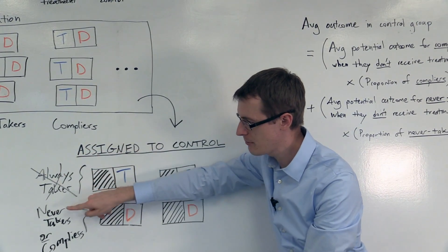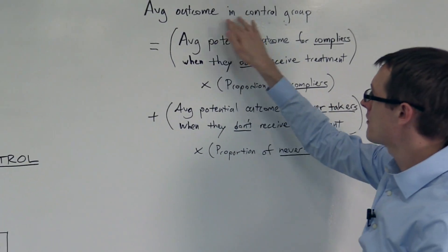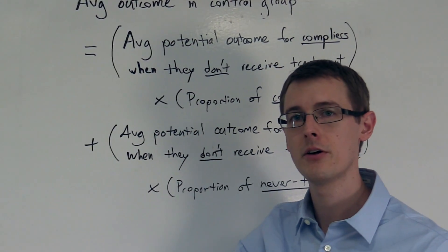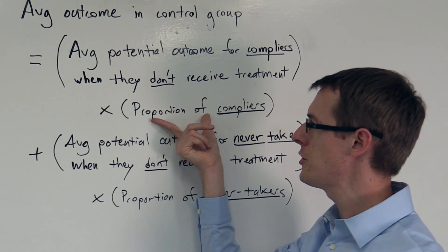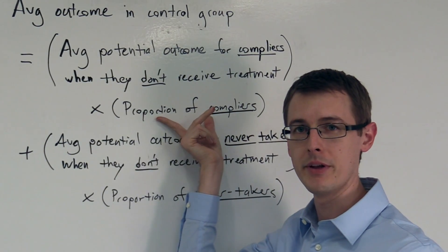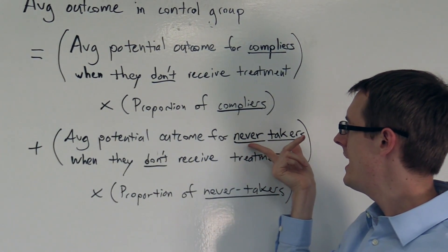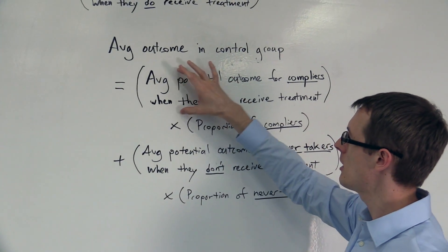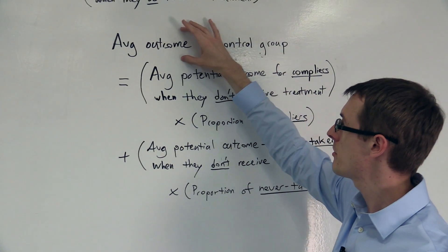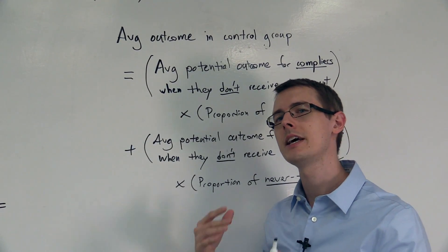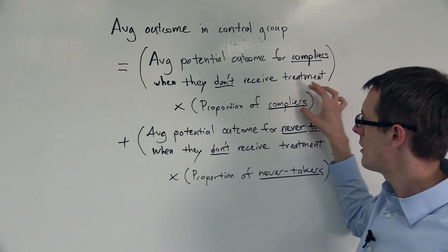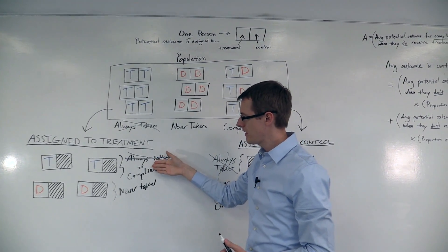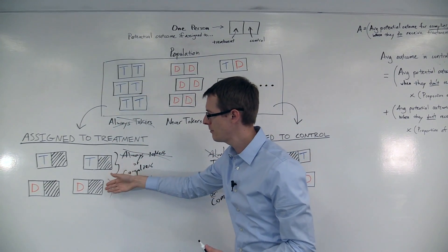I've written out an equation that describes that mixture. On the left-hand side is the average outcome — say the average cholesterol — in the control group. That's the average of everybody in the control group, since we're assuming there are no always-takers. So the average outcome in the control group equals the average potential outcome for compliers when they don't receive treatment — because nobody here receives treatment — multiplied by the proportion of compliers in our population, plus the average outcome for never-takers when they don't receive treatment, multiplied by the proportion of never-takers.